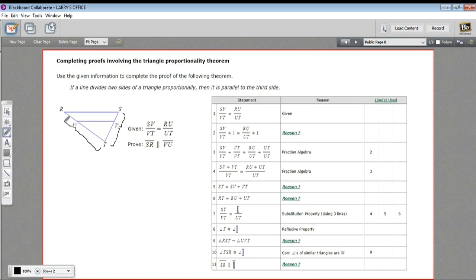when you cut a triangle with a line, then that line has to be parallel to the third side. So if this line divides the sides proportionally, then it's parallel to that third side of the triangle.